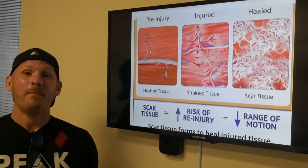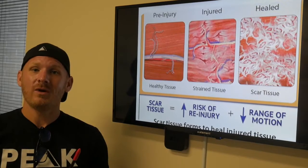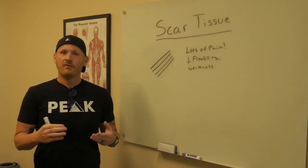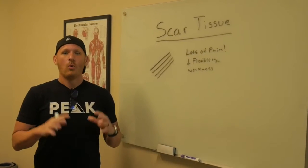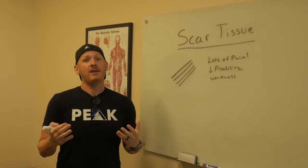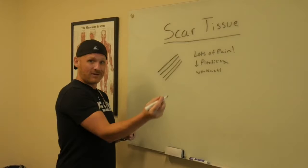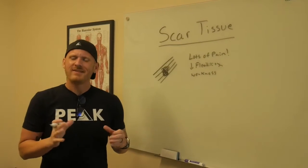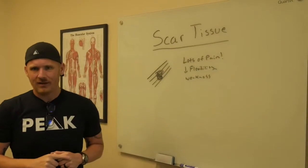As that area starts to heal, it starts to look very discombobulated — it doesn't look really good. That scar tissue builds up over time and leads to decreased flexibility, pain, and weakness. Your muscle just has one job: it needs to stretch and contract. Over the years with bad posture, bad diet, lack of movement, and lack of exercise, your muscles get overworked and don't get enough blood and oxygen. So over time, scar tissue builds up in the muscle — think of it like plaque on your teeth. When that scar tissue gets in there, it's like glue inside the muscle, making it really hard for the muscle to stretch and contract how it's supposed to. This leads to lots of pain, decreased flexibility, and a lot of weakness.